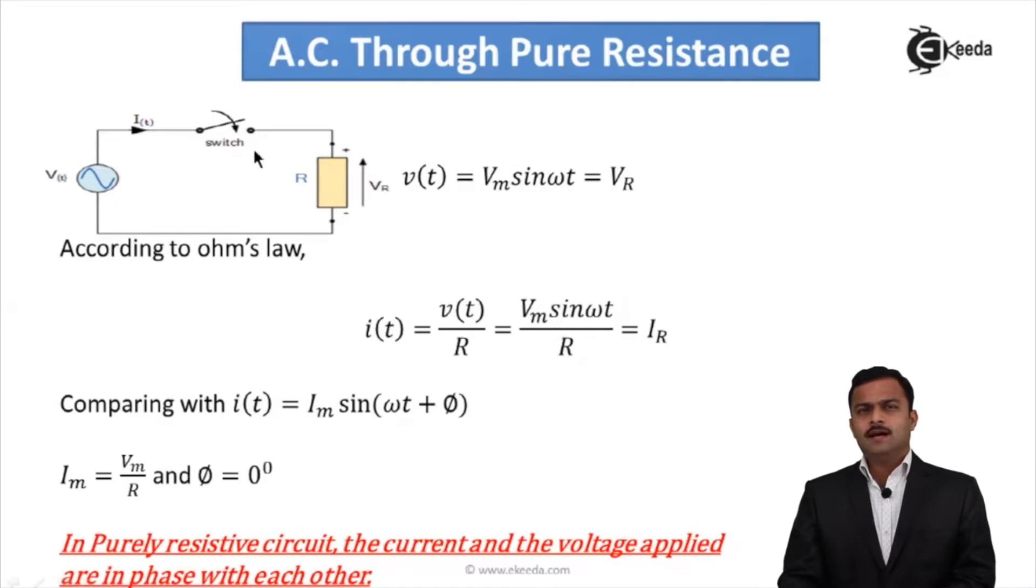Now this is the equation of current I am getting. If I compare with the standard equation I(t) = Im sin(ωt + φ), I will get Im as Vm/R, the maximum value of current. The φ term is missing here, so I can say φ = 0°. Remember, for voltage we have taken φ = 0, so for current also I am getting φ = 0°.